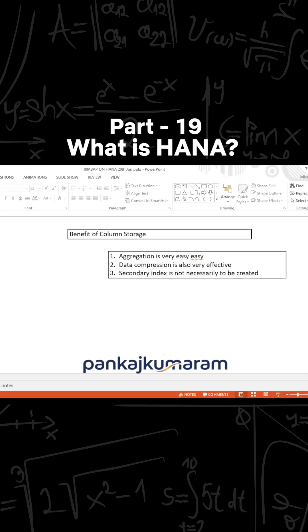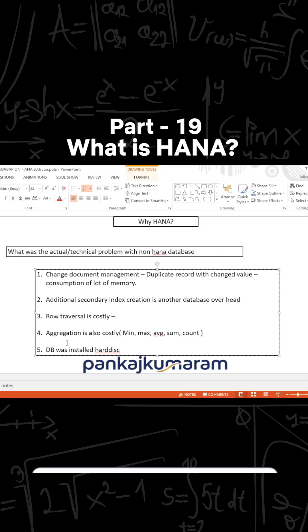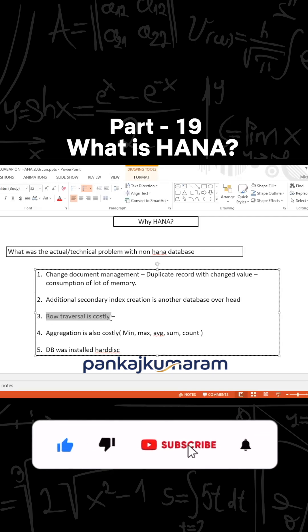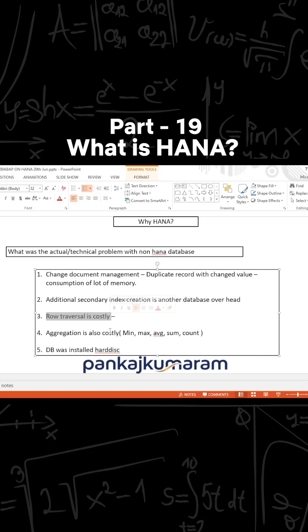So these are the three advantages. And if you recall from the previous slides, we had some more problems where row traversal was costly due to the row storage. When column storage comes into the picture, there is no meaning of row traversal.